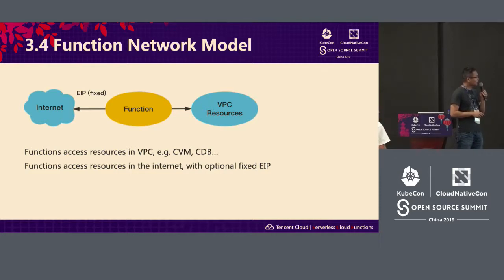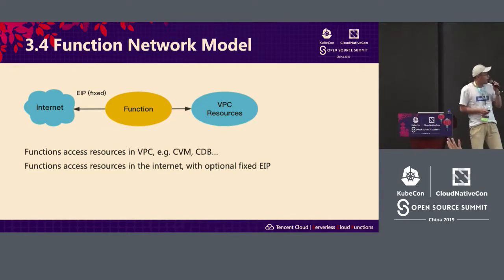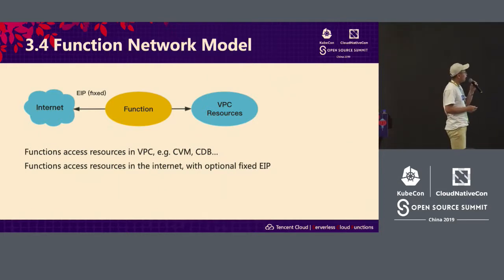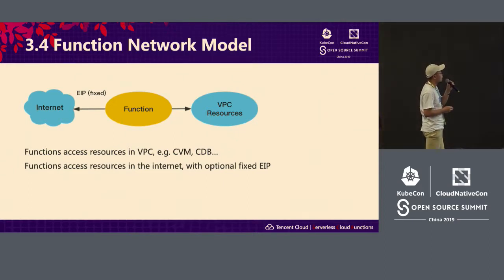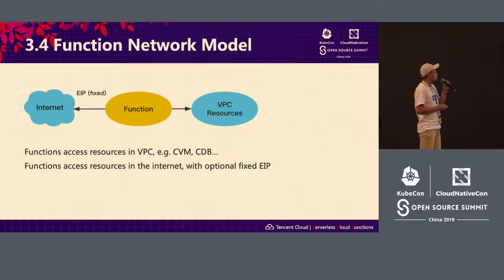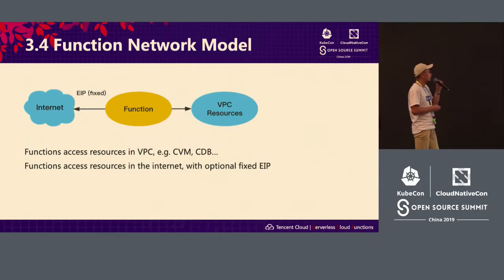Next, we're going to talk about the network module optimization, and my colleague will share. Hi, I'm Lian Bo from Tencent Cloud. I talked about this topic before in Beijing, so I'll be brief. Apart from computation, we also have network access requirements — for example, requesting VPC. VPC is a logical segregation network space in Tencent Cloud. The second scenario is to access the Internet — for example, accessing a data center via the public network.